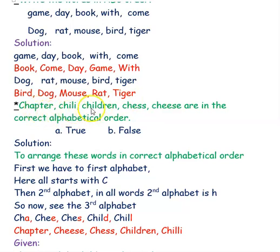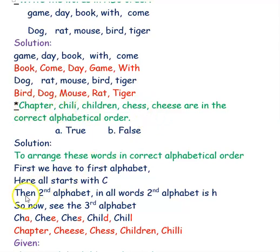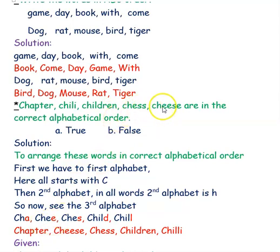Next example: chapter, chili, children, chess, cheese — are these in correct alphabetical order? True or false? Solution: all words start with C, and the second letter is all H. So we look at the third letter. The first third letter is A, giving us chapter. Next is E, giving two words — chess and cheese. Looking at the fourth letter: E comes before S, so cheese comes before chess.